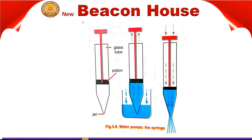As you can see, there is a glass tube — this is the glass tube I discussed previously. This is the piston and this is the jet. These are the three main parts of the syringe, which we can also call the water pump syringe.